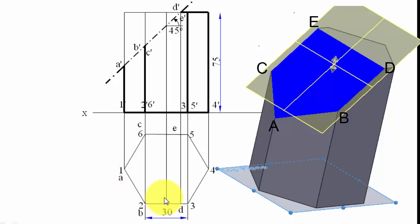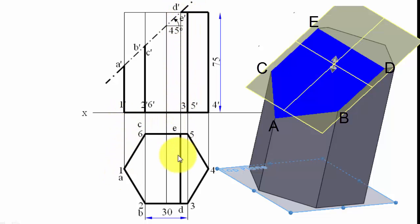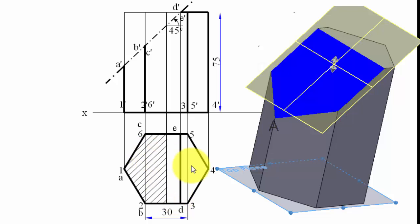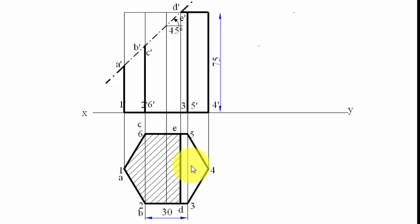We now darken the visible portion of the top view, hatch the section — the portion between the cutting plane's start and end — and the sectional top view is complete.